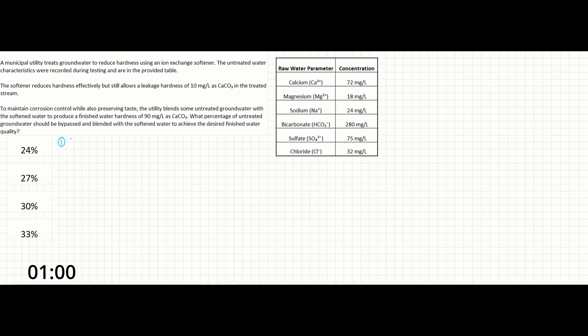In this problem, the ultimate goal is to figure out what percentage of the groundwater can be bypassed during the ion exchange softener. That means the first thing we have to do is figure out which of the parameters contribute to hardness in the problem.